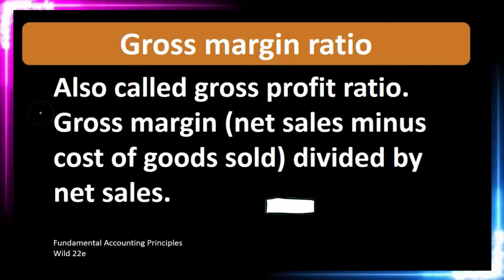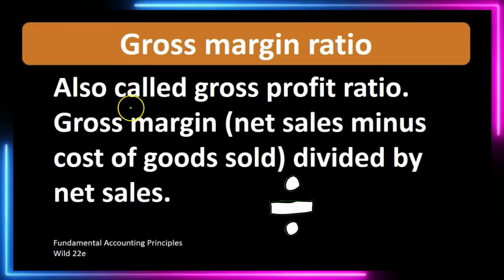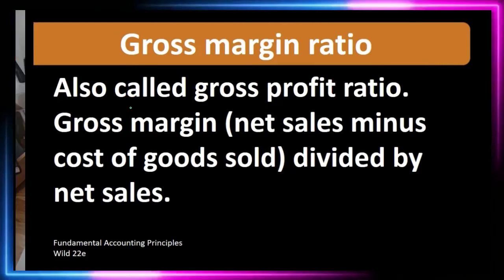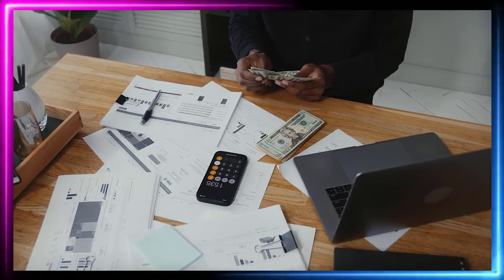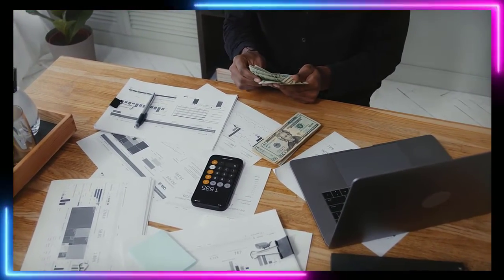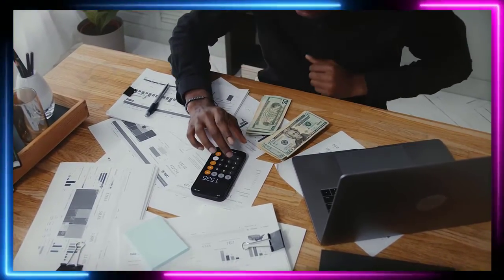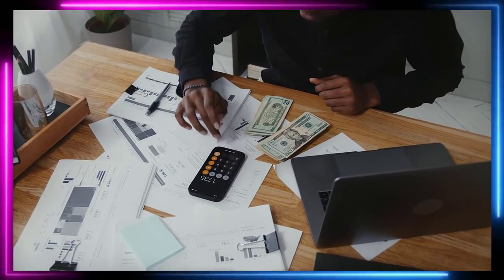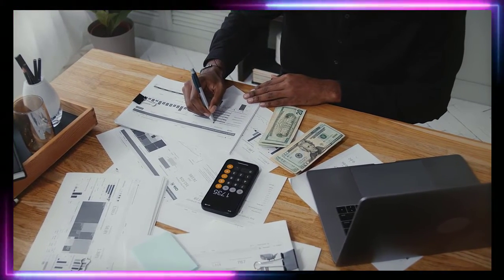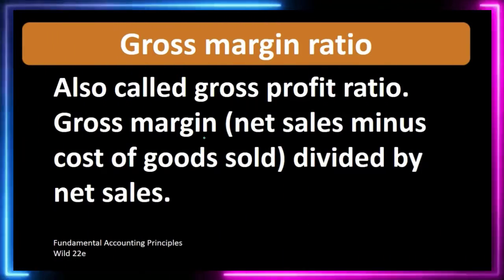So gross margin ratio can also be described as the gross profit ratio. It's a calculated ratio: net sales minus cost of goods sold — which is equivalent to the gross margin, also called the gross profit — divided by net sales. We're taking the gross margin number and dividing it by net sales.